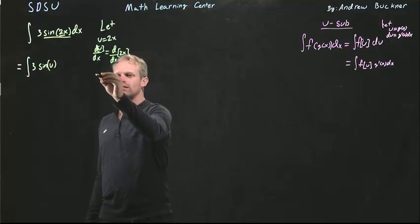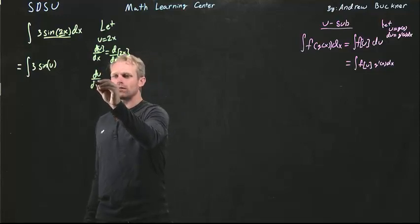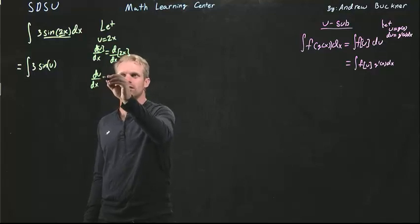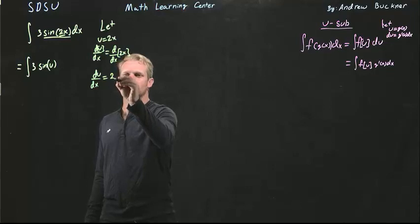Now I need to take the derivative with respect to x of both sides of the equation here. So I get du over dx, which is the derivative of u, or the change in u over the change in x, equals 2.